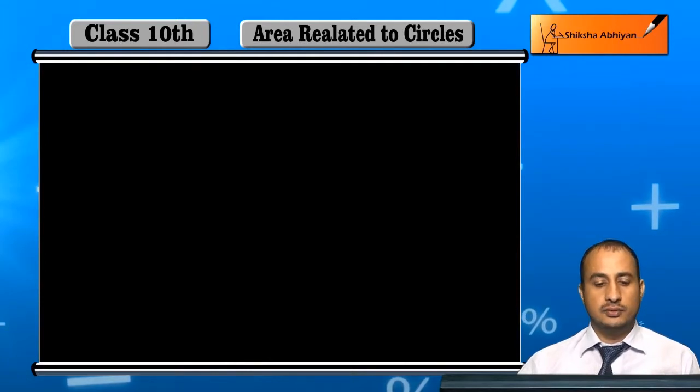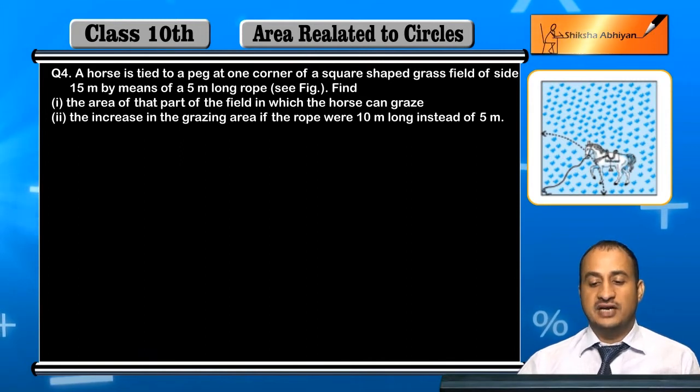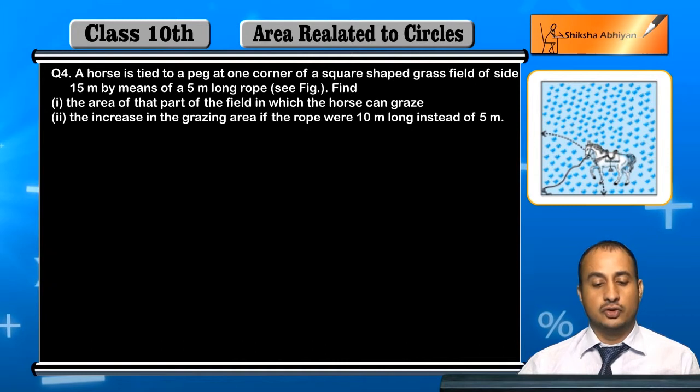Now students, see question 4. A horse is tied to a peg at one corner of a square grass field of side 15 meters by means of a 5 meter long rope.